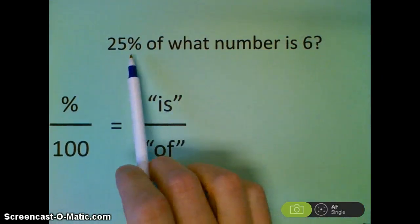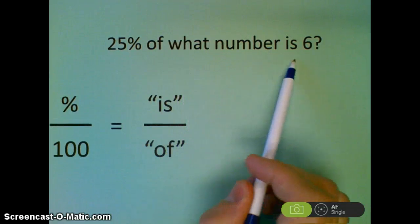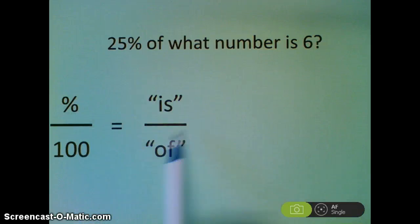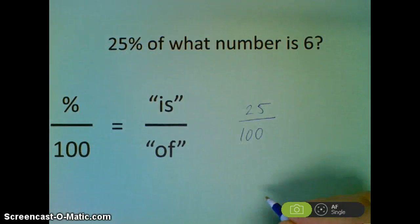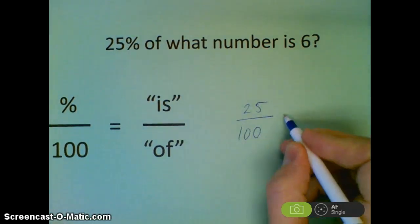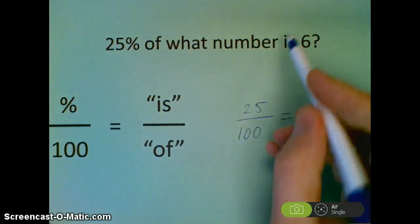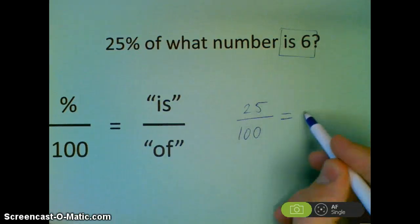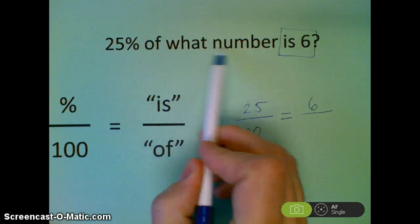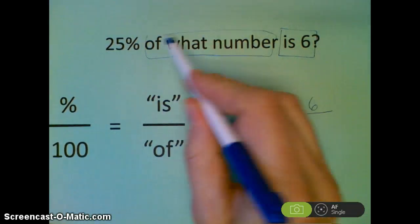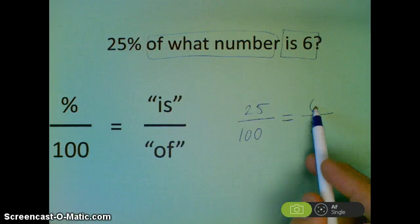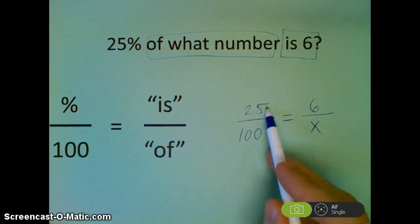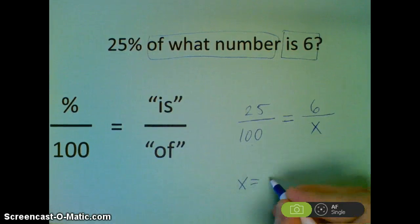Here's the part that you write down: 25% of what number is 6? Now I just have to remember this proportion. So they give me 25%, which means I plug in 25. The 100 always stays the same. And it goes is over of. So they tell me is 6, which means 6 goes on the top. And of what number is my variable, the number I'm trying to find. So now I solve this like I would solve any proportion. 6 times 100 equals 600 divided by 25. x equals 24.